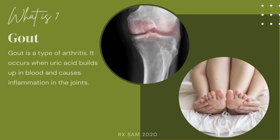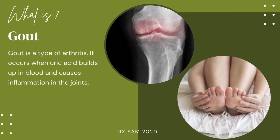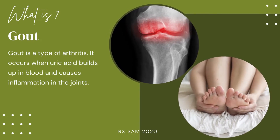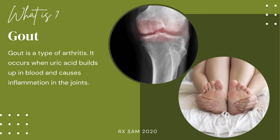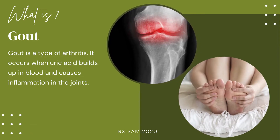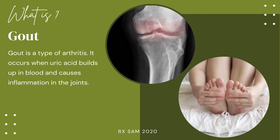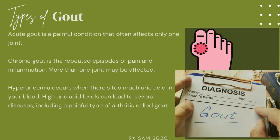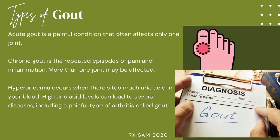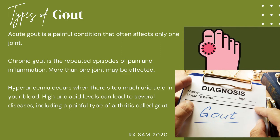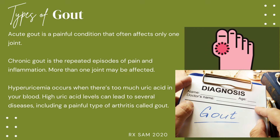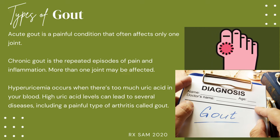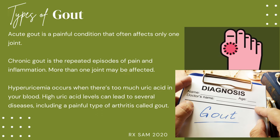Gout is a type of arthritis. It occurs when uric acid builds up in blood and causes inflammation in the joints. Acute gout is a painful condition that often affects only one joint. Chronic gout is the repeated episodes of pain and inflammation, and more than one joint may be affected.